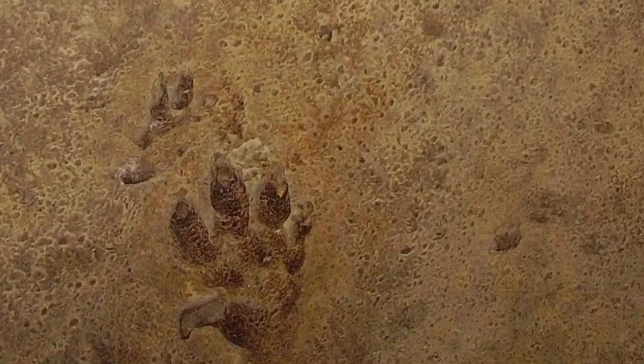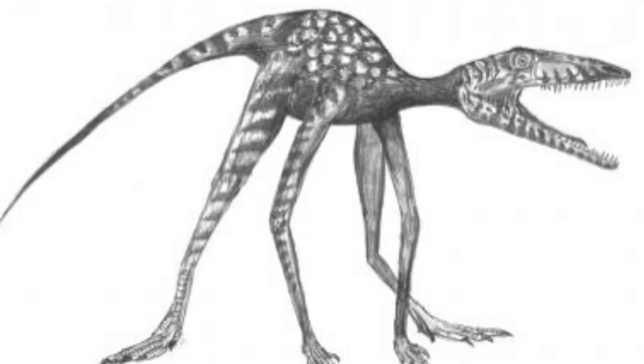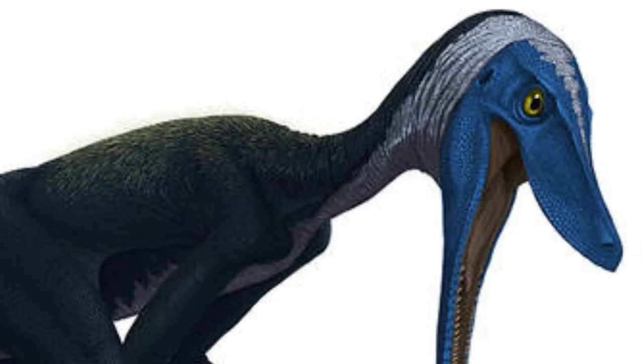Ichnofossils. These are fossil records of biological activity but not the remains of the plant or animal itself. They include fossilized footprints and are also called trace fossils. Prototodactylus is an ichno-genus known from footprints found in Poland and France, probably made by an animal that would have been an early quadrupedal forerunner of dinosaurs. The fossil dates back to the early Triassic, a few million years after the Great Dying, making it one of the earliest of the terrible lizards.